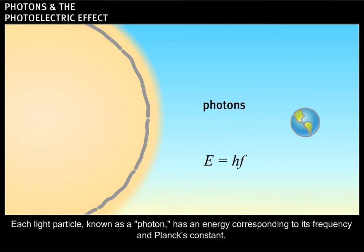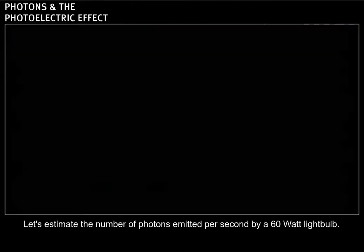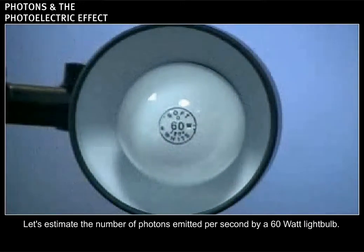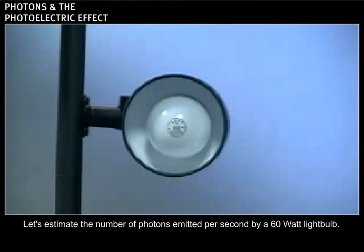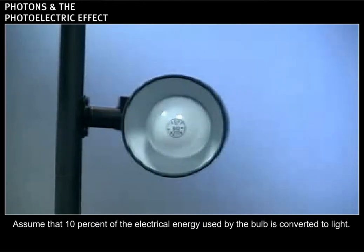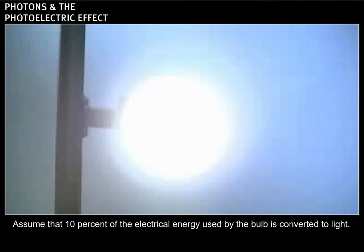Each light particle, known as a photon, has an energy corresponding to its frequency and Planck's constant. Let's estimate the number of photons emitted per second by a 60-watt light bulb. Assume that 10% of the electrical energy used by the bulb is converted to light.